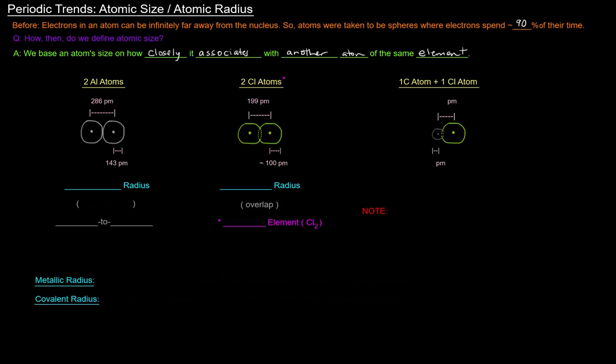And this is going to be different for metals versus non-metals. So we'll start off with metals over here with two aluminum atoms, because aluminum, of course, is a metal.